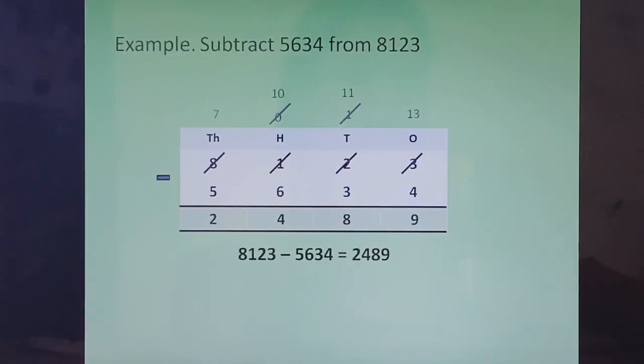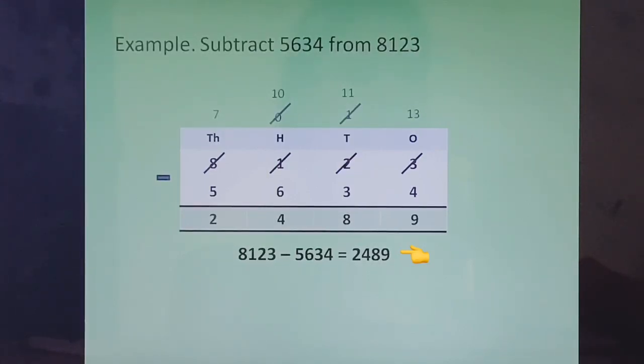And when we write it in number sentence form, we write it as 8123 minus 5634 is equal to 2489.